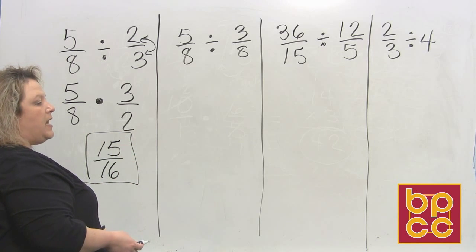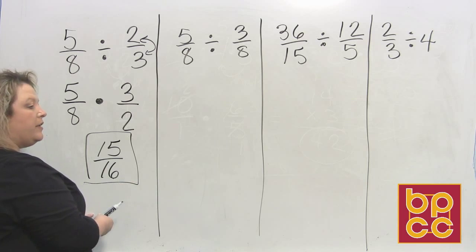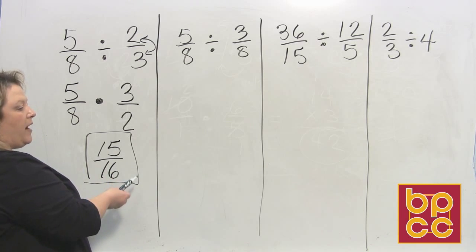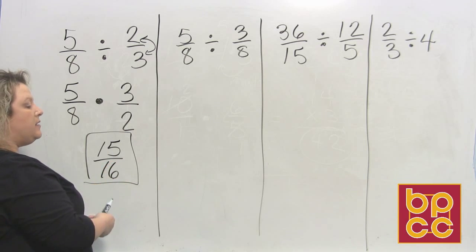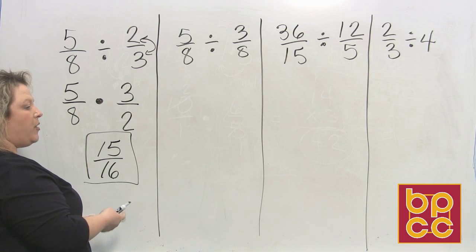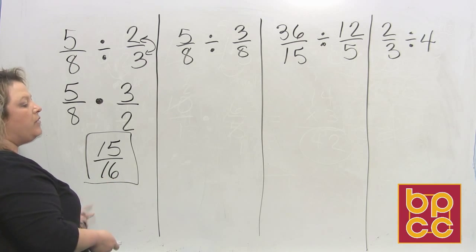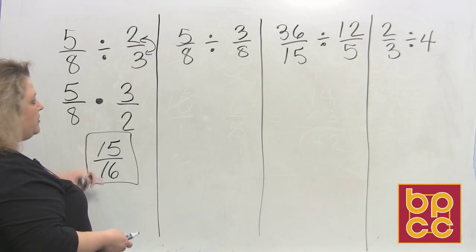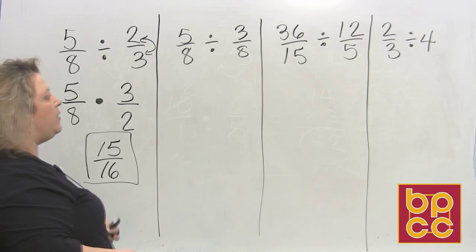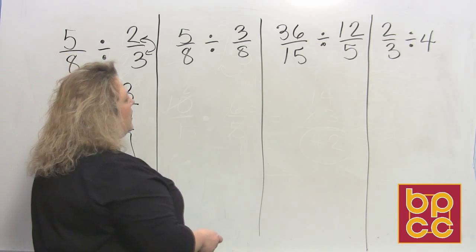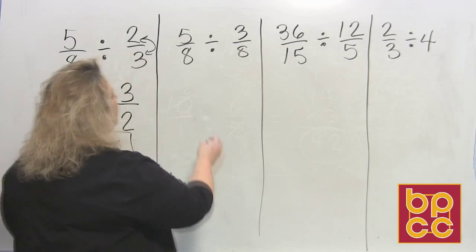And 15 over 16 has nothing in common. And just a little hint, anytime you have a fraction where the numerator and the denominator are just one digit apart, like 15 and 16, you'll never be able to reduce that because there's nothing in between them. That's an actual whole number. All right, so let's go to the next one. We have 5 eighths again.